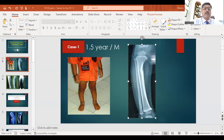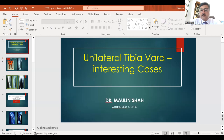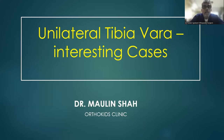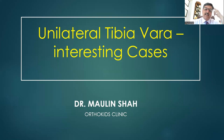That was a fantastic talk and a great dive into the literature about Cosen's phenomenon, Tushar. The best approach is to overcorrect slightly so that if there is any rebound it corrects to neutral. Let's move on to the next presentation. Let me share my screen — we are going to talk about tibia vara and these are unilateral tibia vara cases.